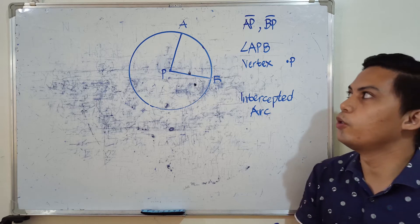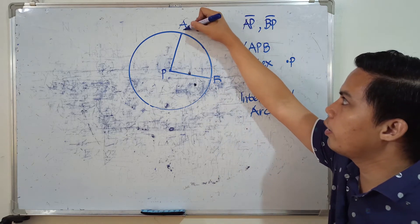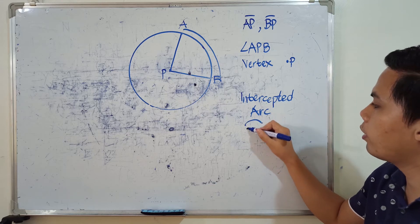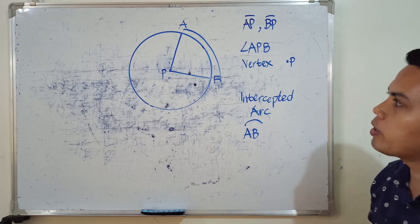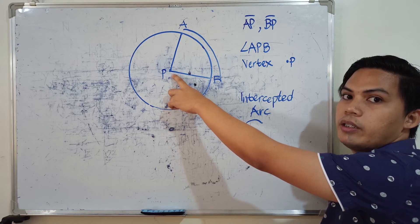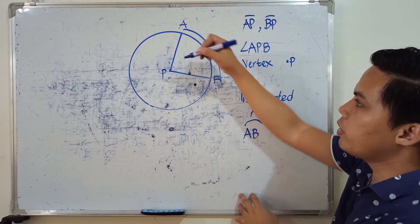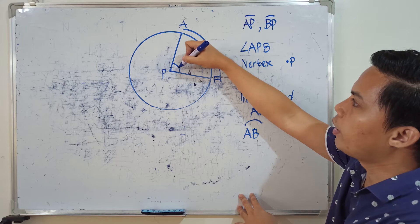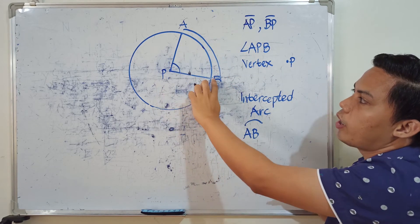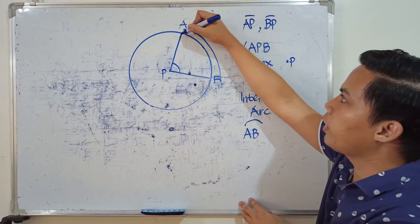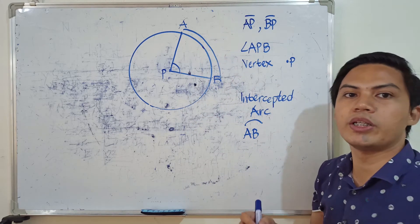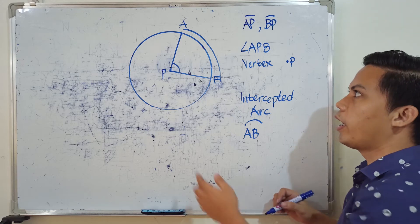In this case, the intercepted arc is arc AB. You'll notice that the intercepted arc is just opposite the central angle. The central angle intercepts at points A and B, and those points form our intercepted arc.